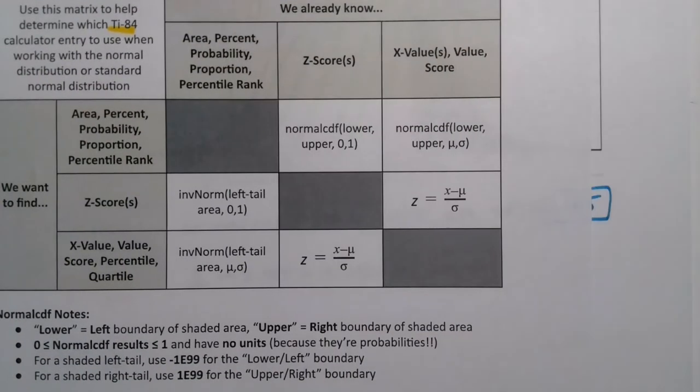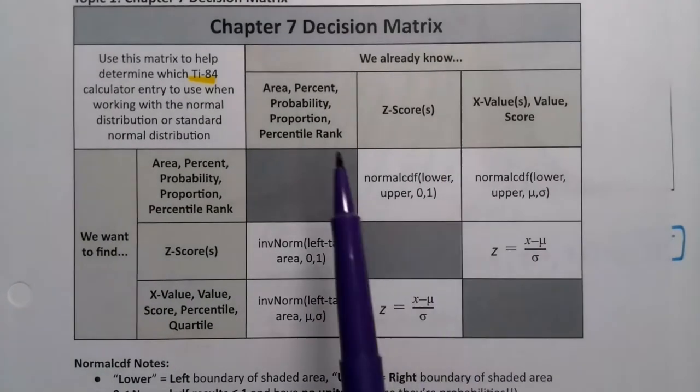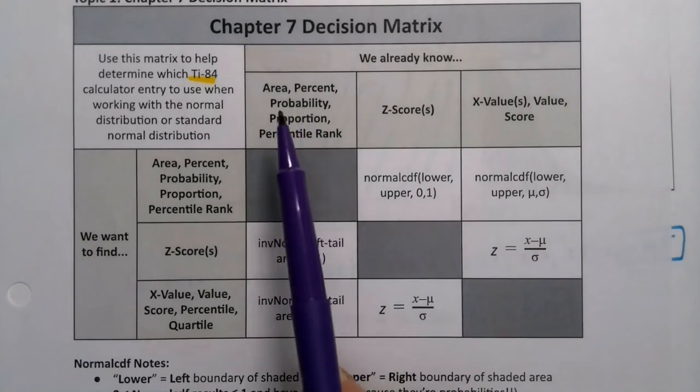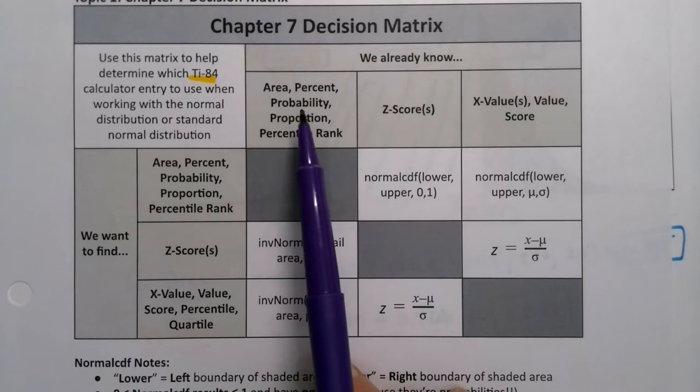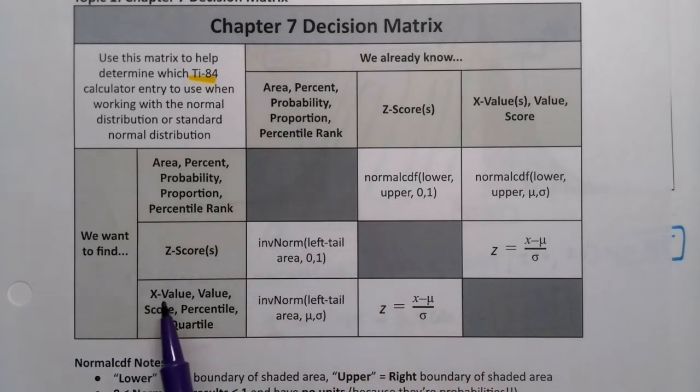Looking at this decision matrix. I know all the areas in this curve, right? I know all three of them, the orange one, the blue one, and the green one. I'm looking for an x value. I'm looking for an x. So I'm going to use inverse norm, left tail area, mu sigma.